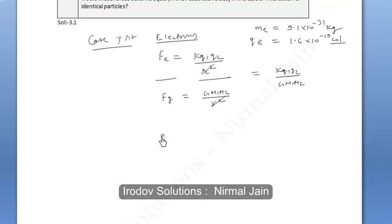We know the value of K is 9 times 10 to the power 9, and the charge of electron is 1.6 times 10 to the power minus 19 to the square.